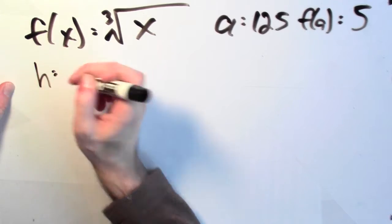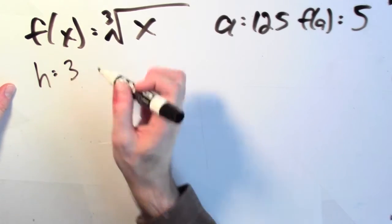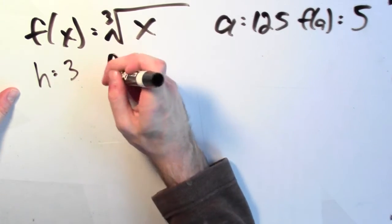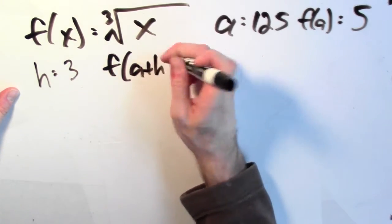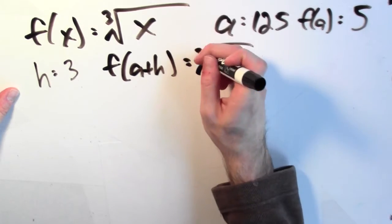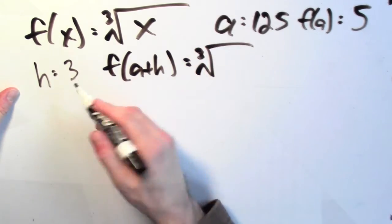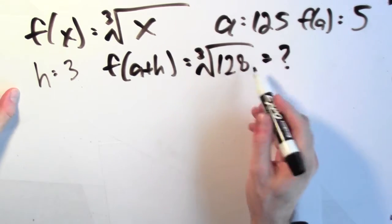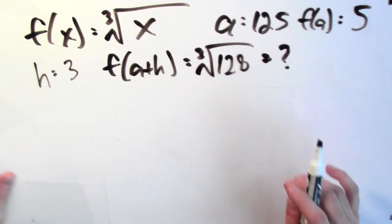Now, let's try to wiggle the input and see what happens. Let's wiggle by h, which will be 3. 3 is not all that small, but compared to 125, 3 is pretty small. And I'd like to know what f(a+h) is. I want to know what the cube root of 125 plus 3, 128 is. And that's going to be hard to know, so I'm only going to know approximately.